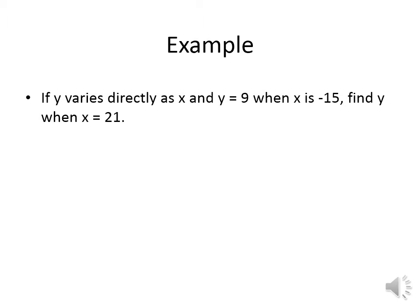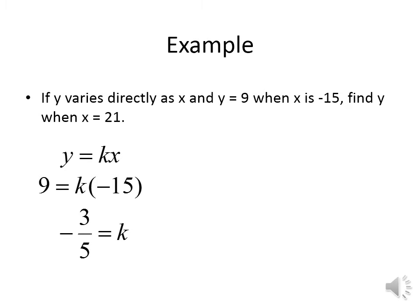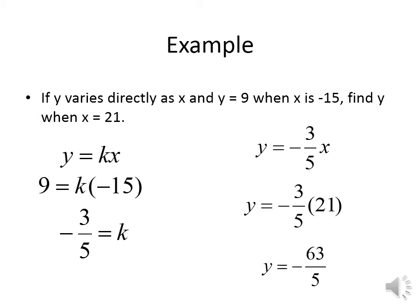If y varies directly as x and y equals 9 when x equals negative 15, find the value of y when x equals 21. We use the relation method: y equals k times x. Replace y with 9 and x with negative 15, which gives k equals negative 3 over 5. So the relation is y equals negative 3 over 5 times x. To find y when x equals 21: y equals negative 3 over 5 times 21, which gives y equals negative 63 over 5.